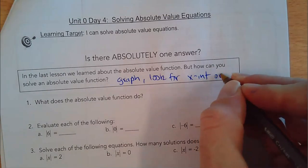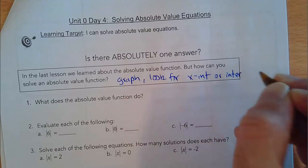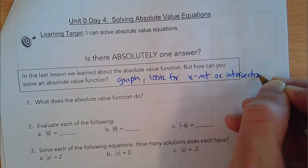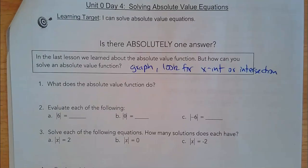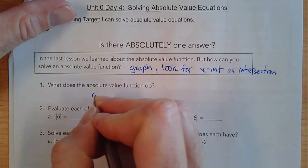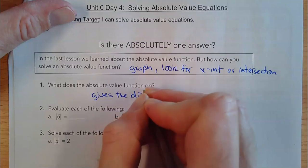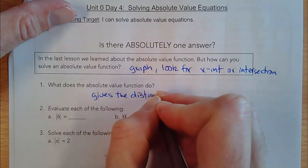So we can look for x-intercepts or for intersection. It's kind of two ways we're going to do this — show you how to do it graphically, and then talk about how to do it algebraically. If you know both ways, it's great. Now, what does the absolute value function do? From yesterday, it gives the distance from zero.